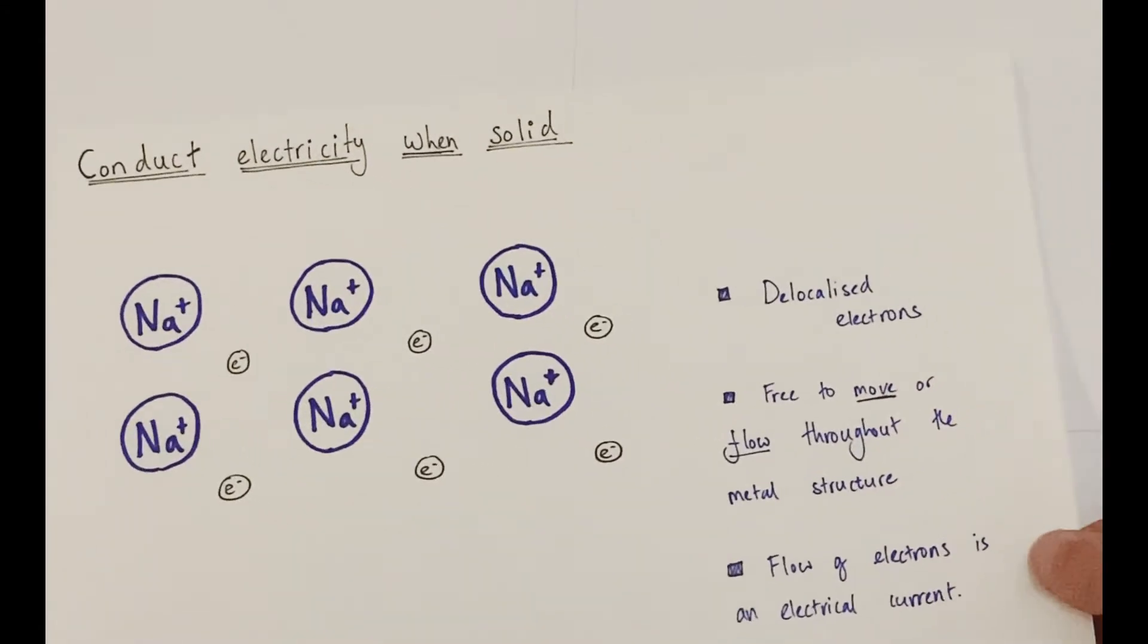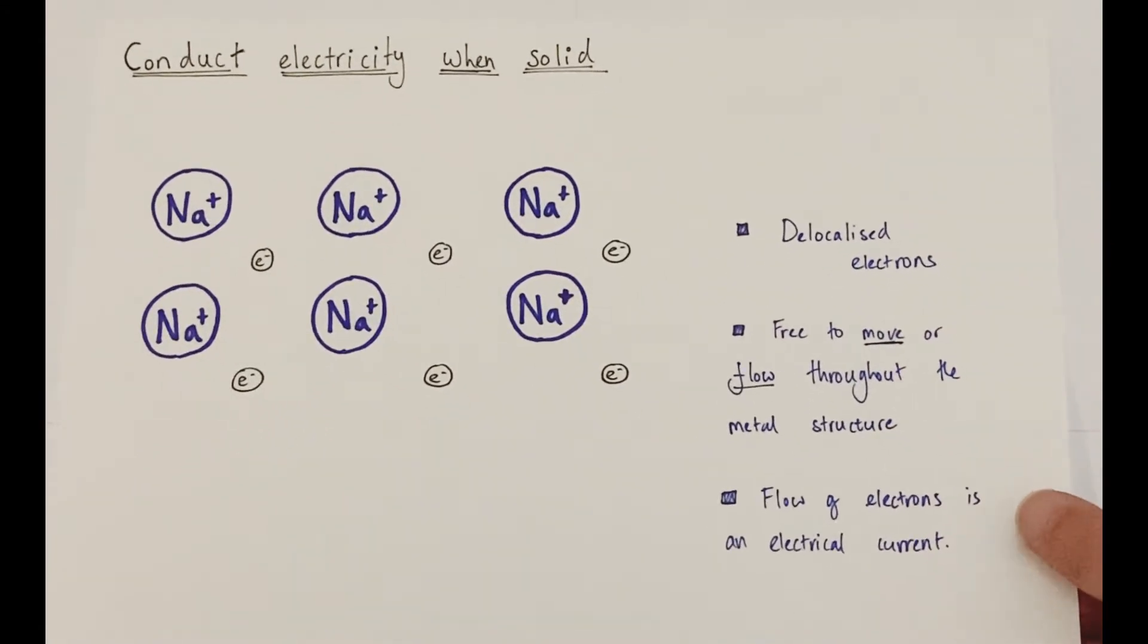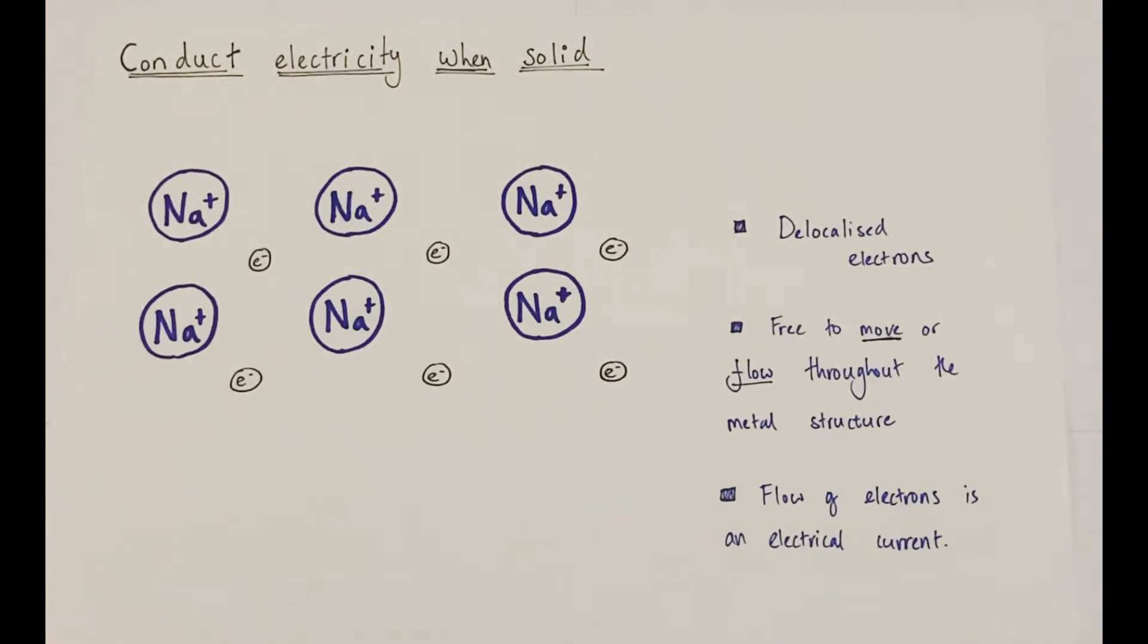Other properties of metallic structures include that they are good conductors, even when they are solid. And the reason behind that is linked very closely to the fact they have delocalized electrons. So that word delocalized implies that they are moving from cation to cation along the structure. They are therefore free to move or flow throughout the metallic structure.